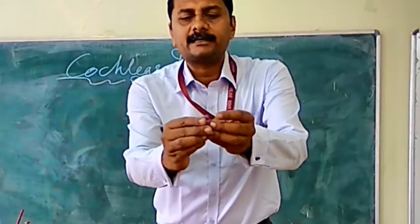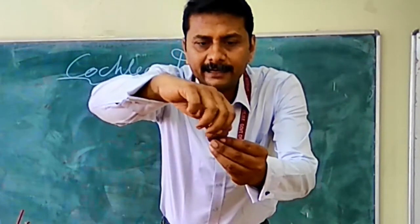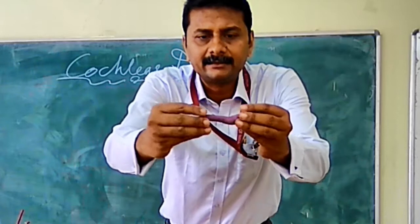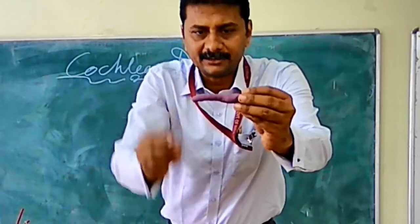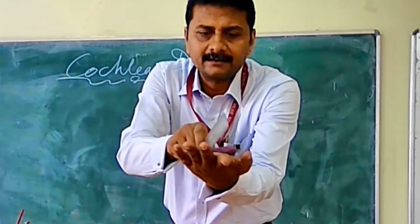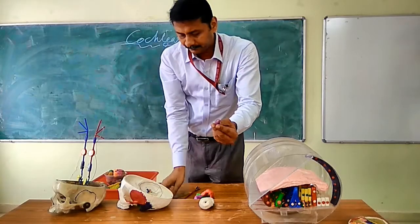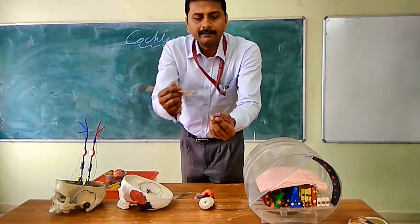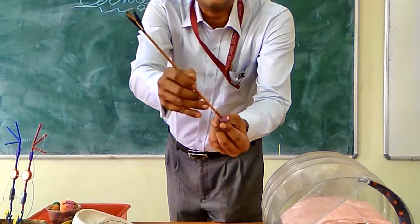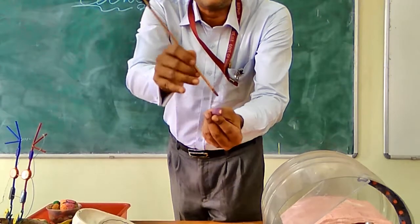Two-and-three-quarter turns — the same cochlea. We unfold it and make it straight. We can then see we have a membranous labyrinth in orange, and there is a bony labyrinth around it in purple. So: membranous labyrinth, bony labyrinth.